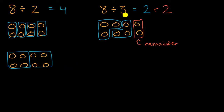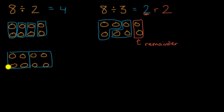Another way to think about it: two times three is six. And then if you were to put back that remainder of two, that's how you can get to eight. Now, another way you could think about it is how we thought about it in the second example with eight divided by two.